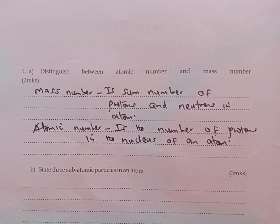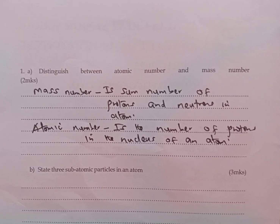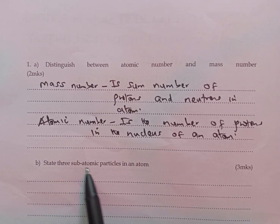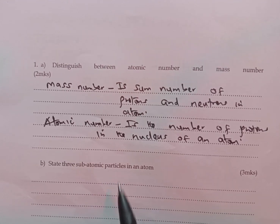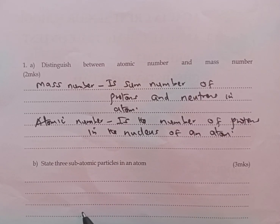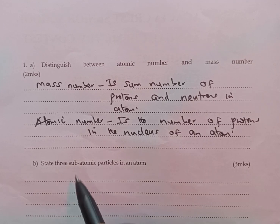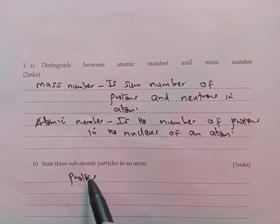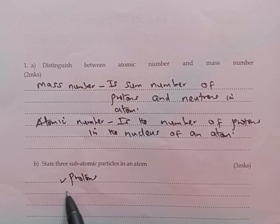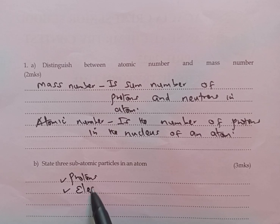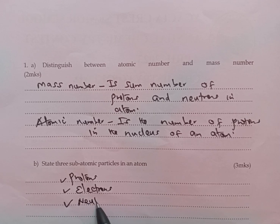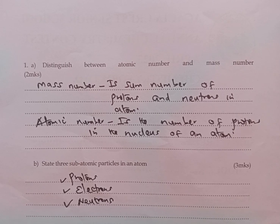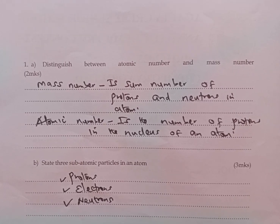That is part A of that question already answered. Then part B: state 3 subatomic particles in an atom. We said atoms are made up of subatomic particles, namely protons, electrons, and neutrons. These are the 3 subatomic particles that form an atom.